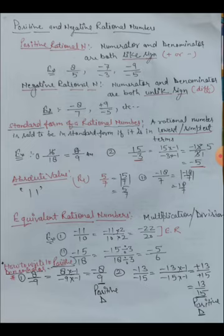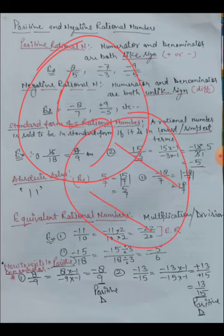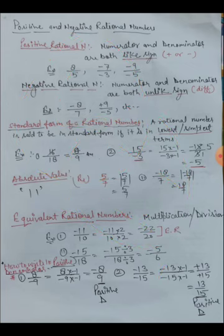Absolute value means the numerical value of any number — that is, the value without its sign. For example, the absolute value of five is five. The symbol for absolute value is two vertical lines. If any number is written between the two lines, we find its absolute value, which is always the non-negative value of that number.